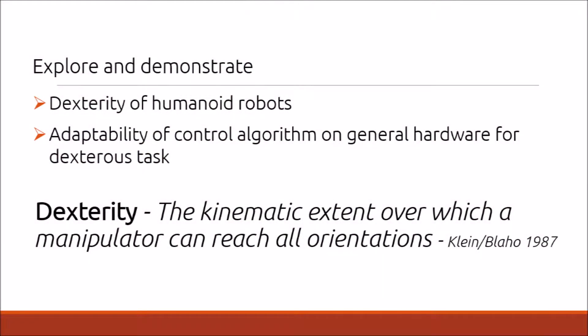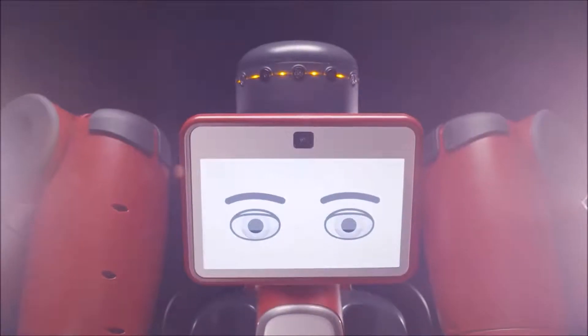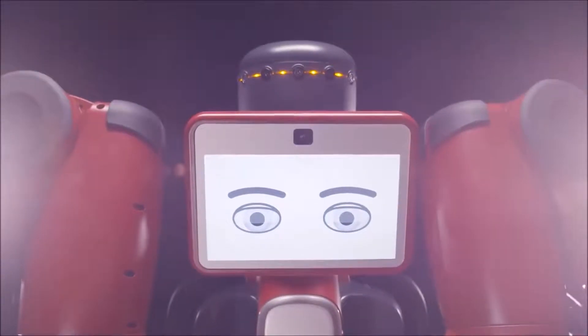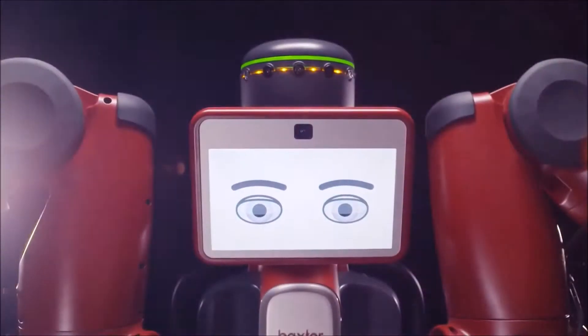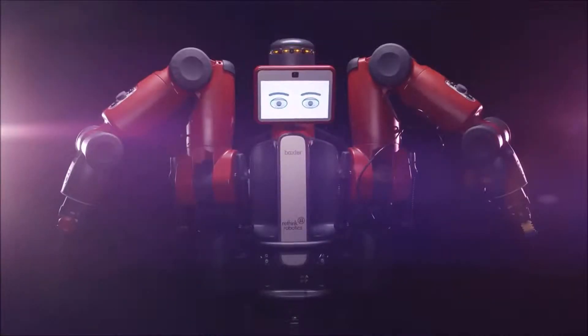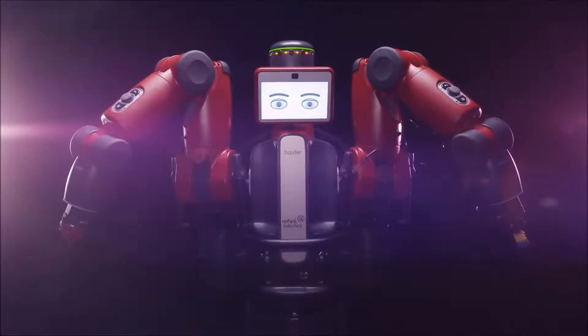We assumed dexterity to be the kinematic extent over which a manipulator can reach all orientations. The principal hardware available to us was Rethink Robotics' Baxter, a robot with two 7-degrees-of-freedom arms.